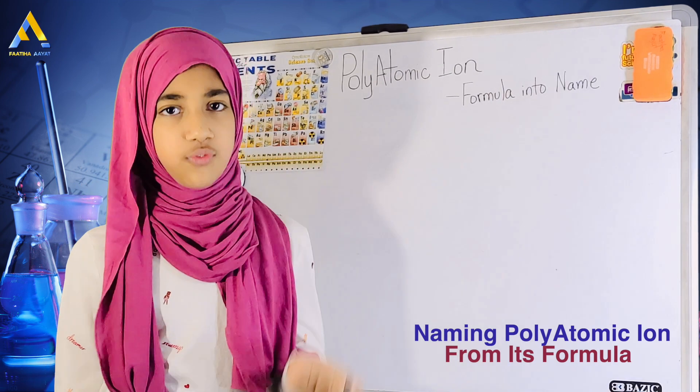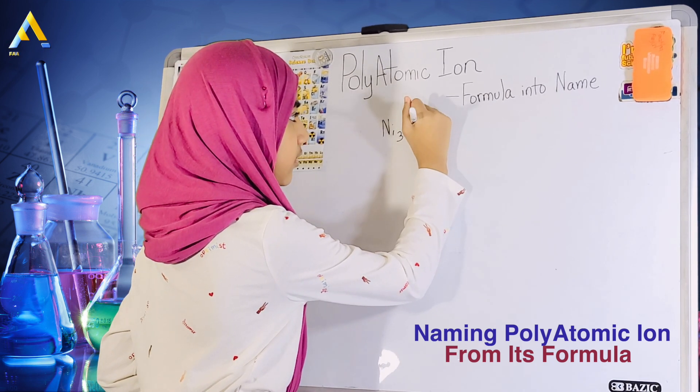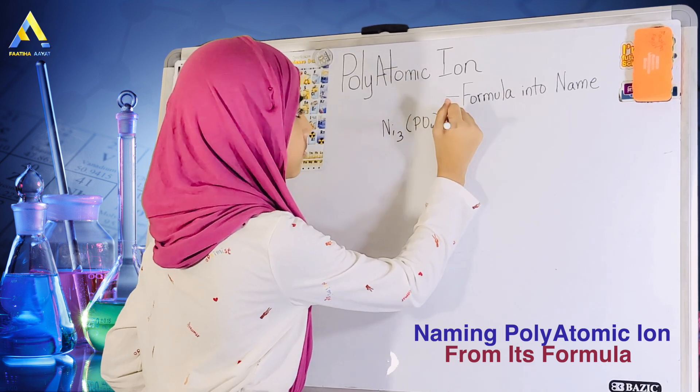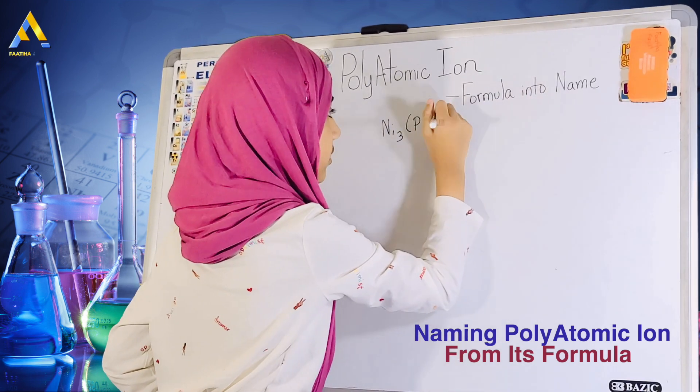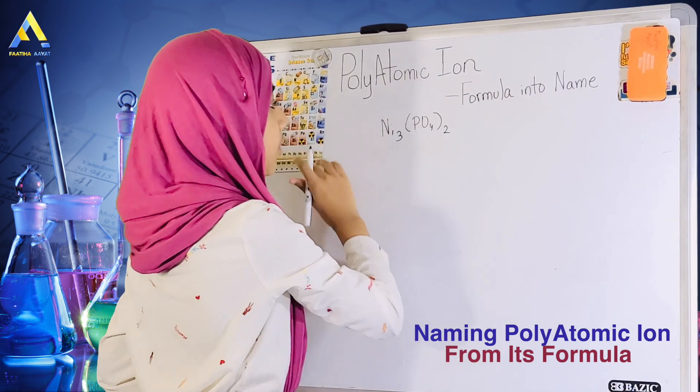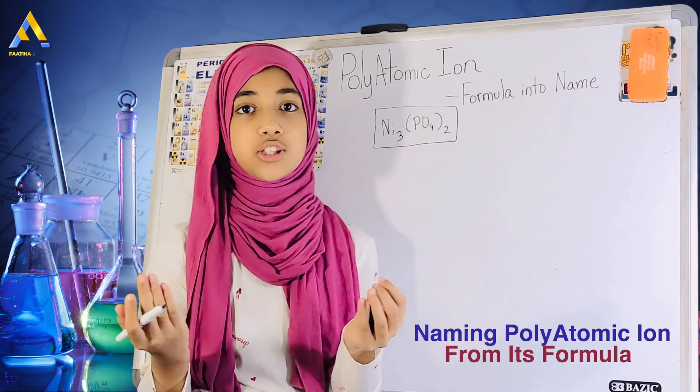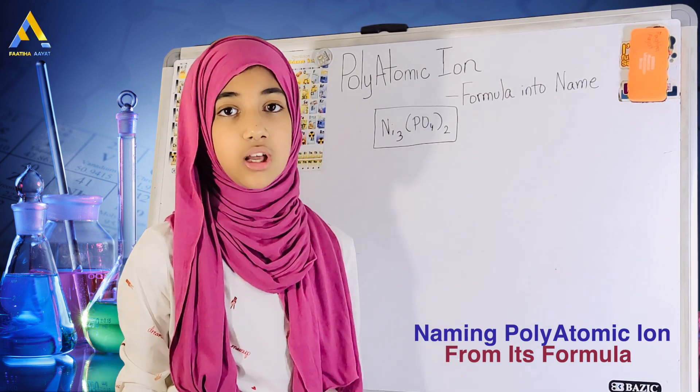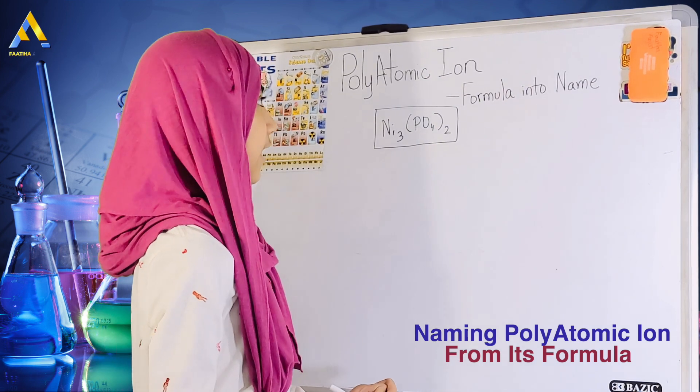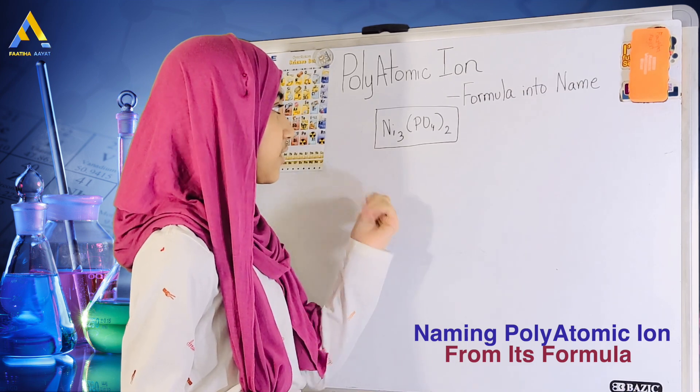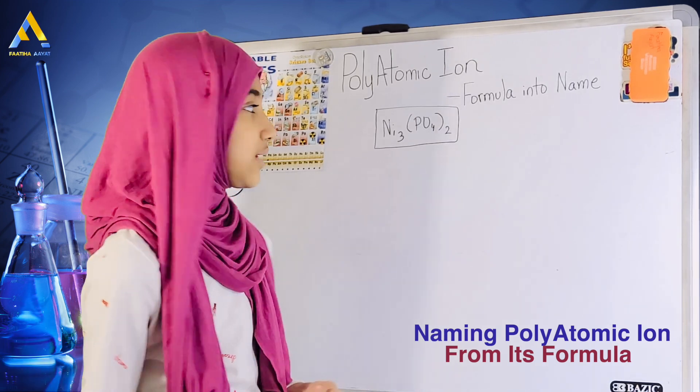My example is, let's say our formula is Ni3(PO4)2, okay. Hopefully, you can see it. This will be our formula, which we will turn into the name. So, pause the video and actually try to work on it. And if you're not sure, then inshallah, we'll work on it together.